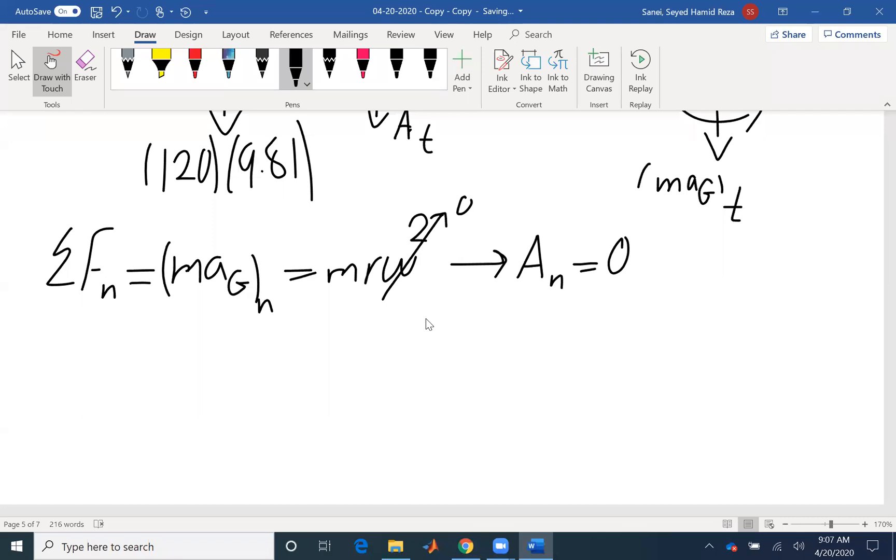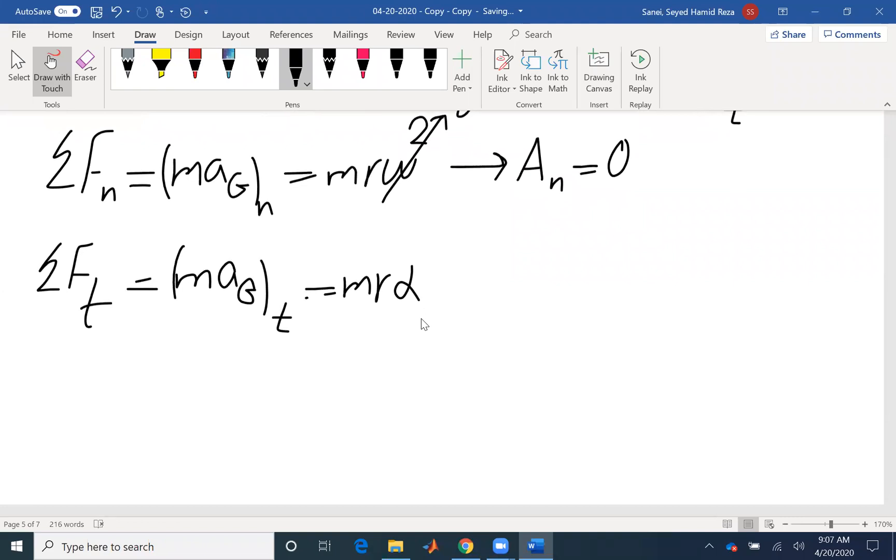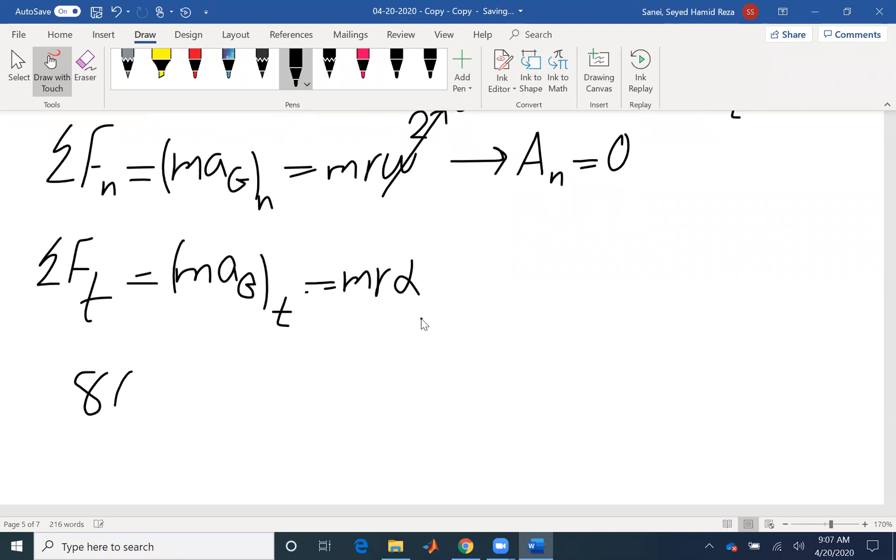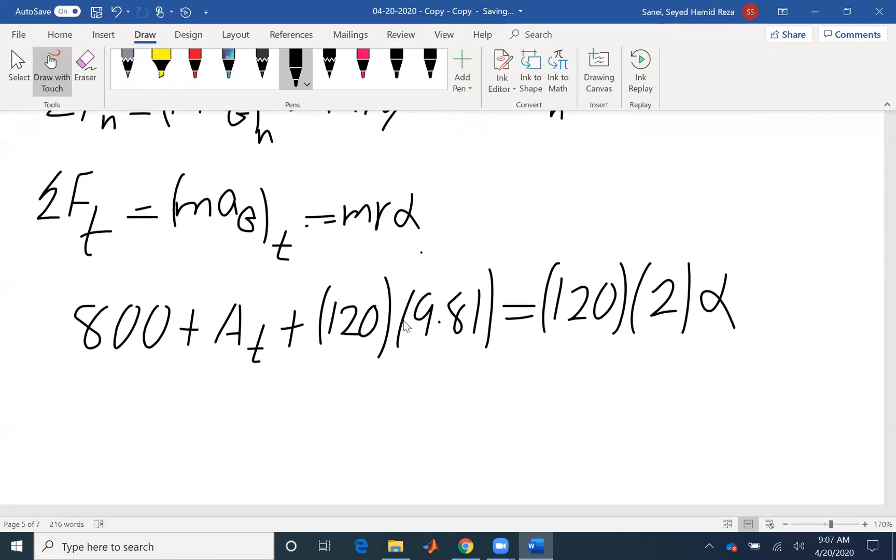Now, I have summation of forces in T direction. That would be M A_G, the acceleration of center of gravity in T direction or M R alpha. Summation of forces in T. In the vertical component, I have 800. I have A_T itself. I have the weight M R alpha. M is 120. R is 2. And then alpha. I have two unknowns here, alpha and A_T. I can't solve it.